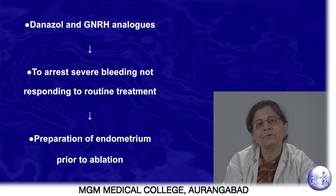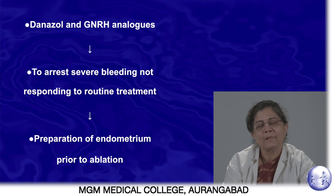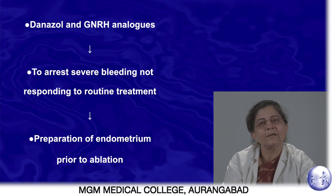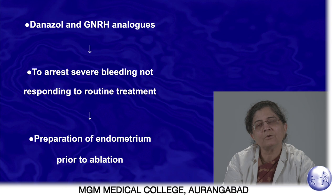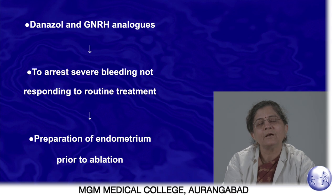Danazol or GnRH analogues are used in very severe bleeding not responding to routine management even after increasing progesterone dose, or to prepare the endometrium for ablation — since danazol and GnRH analogues reduce vascularity of the endometrium, making endometrial ablation an easier procedure.